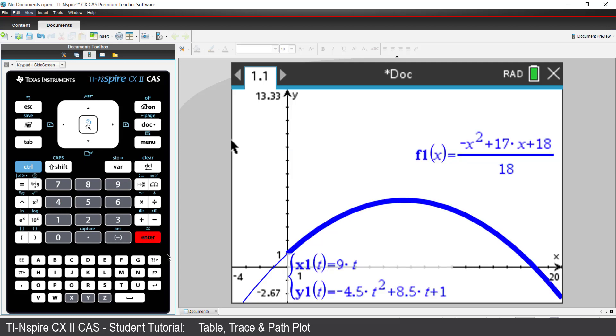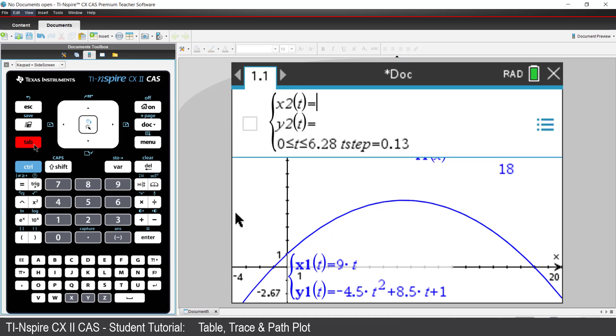Suppose the projectile is a football, and a player is chasing after the ball. The player runs at a speed of 6 meters per second but starts 4 meters ahead of the ball when it's kicked. Let's see if the player is able to mark the ball.